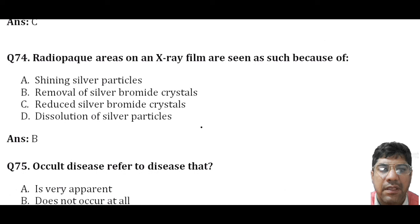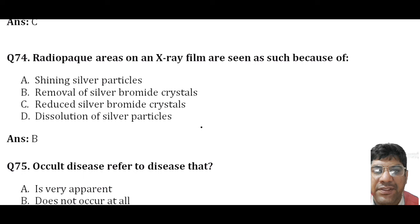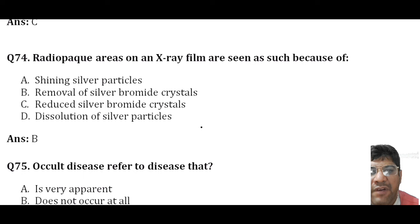Radiopaque areas on x-ray films are seen as follows: when x-rays interact with silver bromide crystals on the film, they reduce these crystals making them insoluble. During the development and fixing procedure in the dark room, the unexposed silver bromide crystals are removed, leaving behind reduced silver crystals. These reduced silver crystals appear as radiopaque areas on the x-ray film.